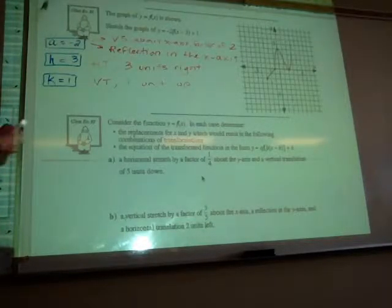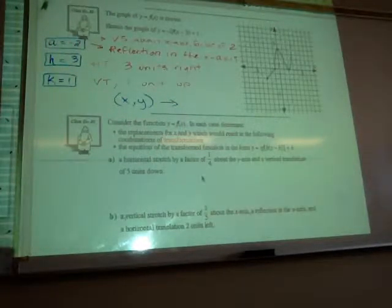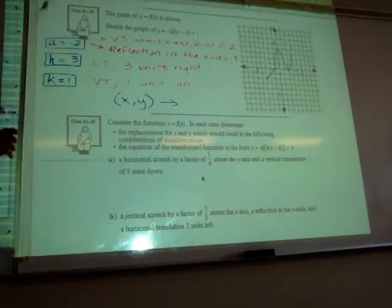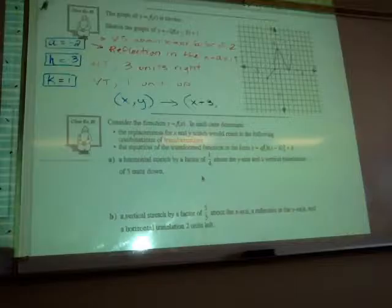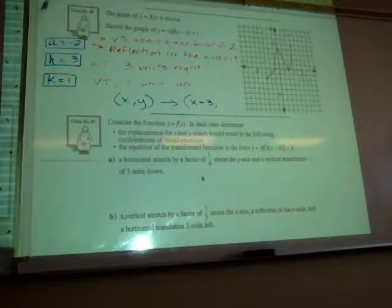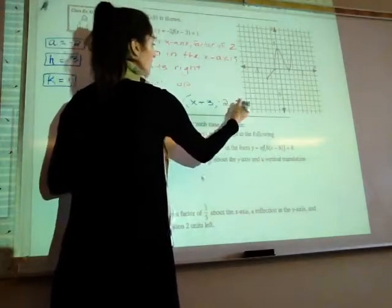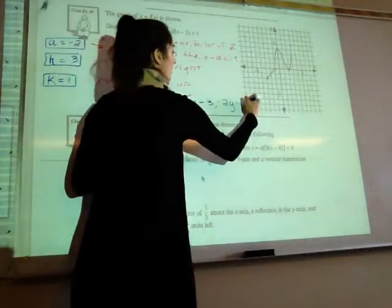Based on all of those descriptions of how this graph will be transformed, let's figure out what our point mapping will be. There's a vertical stretch and a reflection. There's a horizontal translation and a vertical translation. So x is only being impacted by the h value, okay? A horizontal translation. So we're moving to the right, so the x-coordinate will be x plus 3.